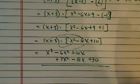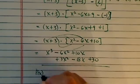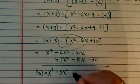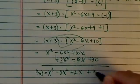So here's my final polynomial. I have p of x equal to x cubed. This is minus 3x squared. This is plus 2x plus 30.